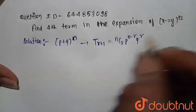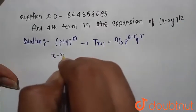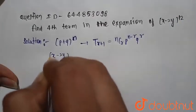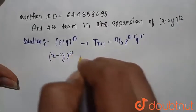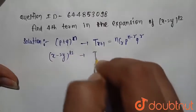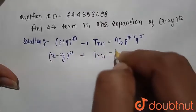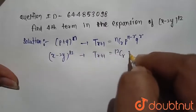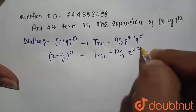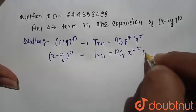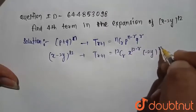So we write the general expansion of this binomial expansion, that is (x minus 2y) raised to power 12. So T_(r+1), the general expansion, is 12Cr, x raised to power 12 minus r, and minus 2y raised to power r.